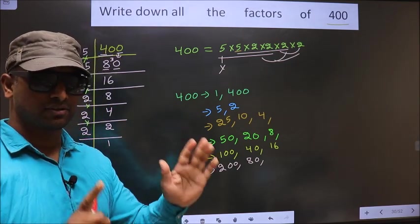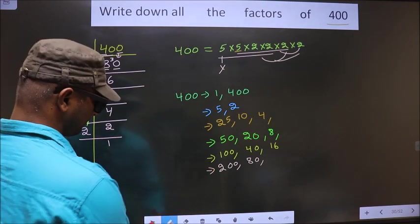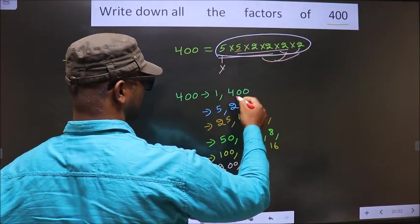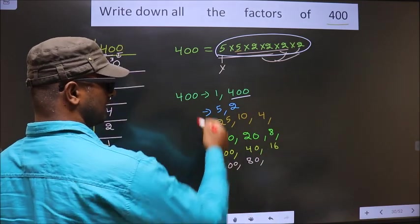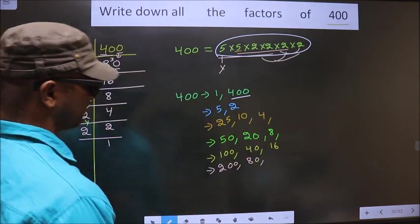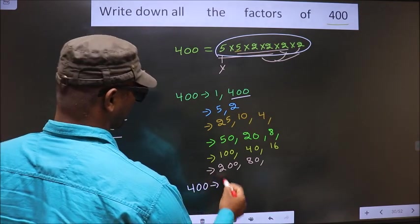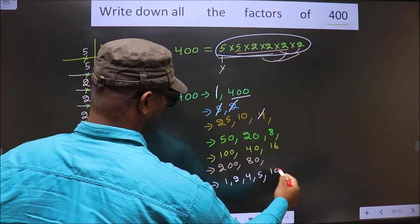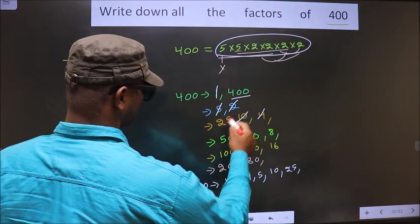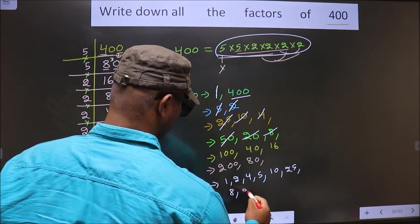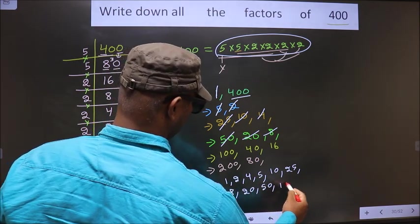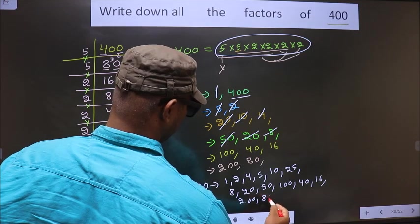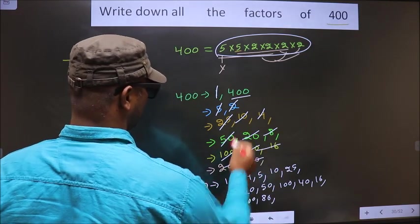Now take the combination of all 6 numbers. Here we have only 6 numbers, so taking all 6 gives 400. Thus these are all the factors of 400: 1, 2, 4, 5, 10, 25, 8, 20, 50, 100, 40, 16, 200, 80, and 400.